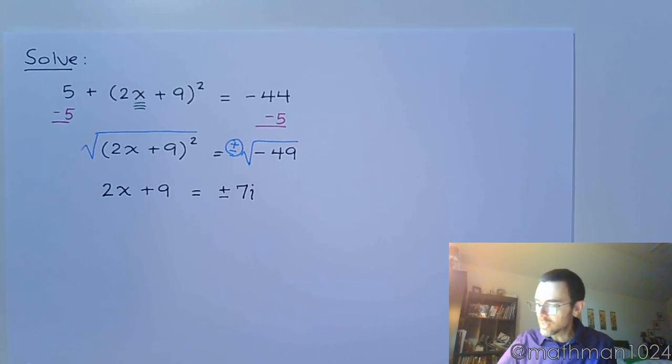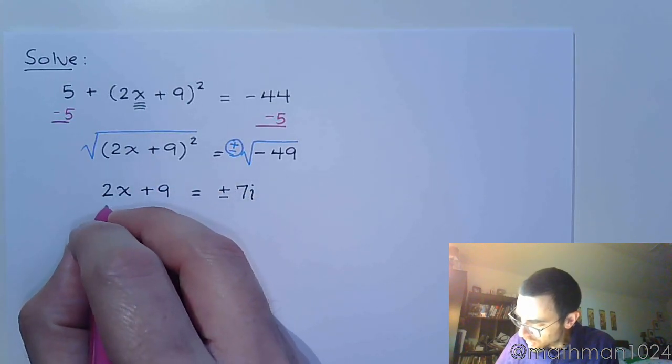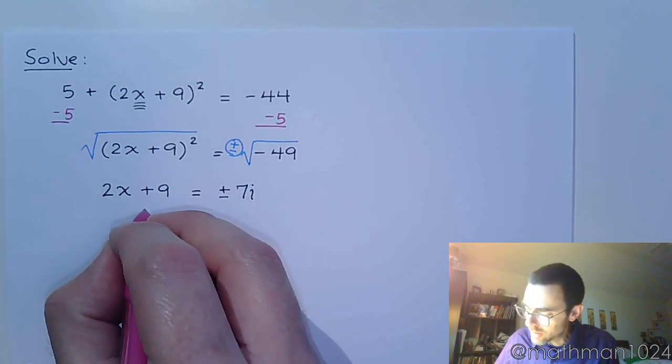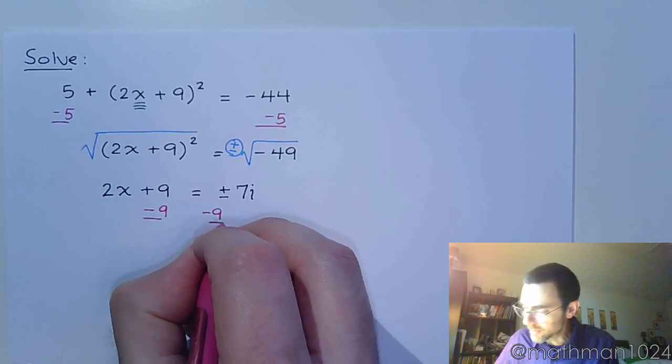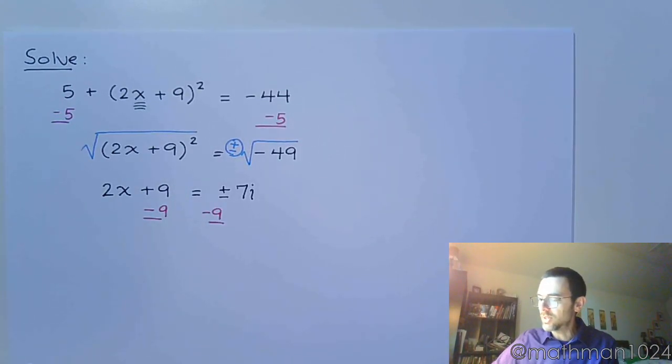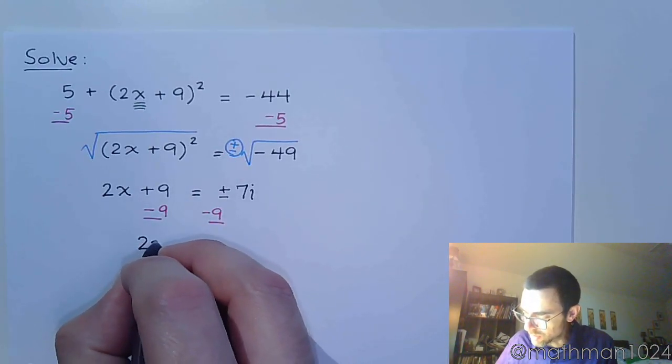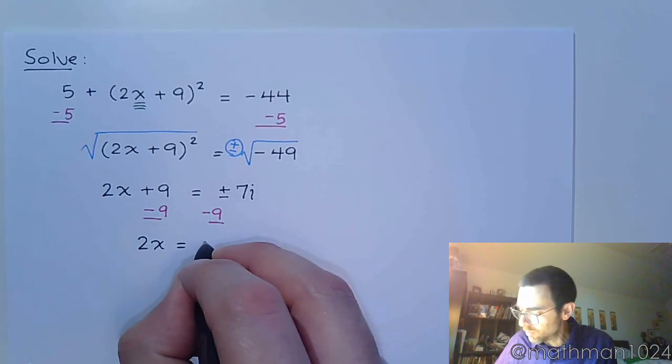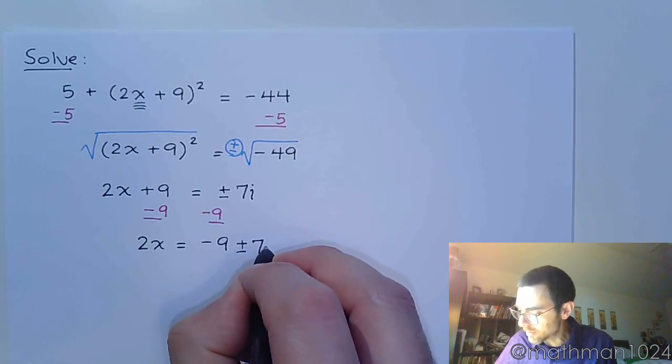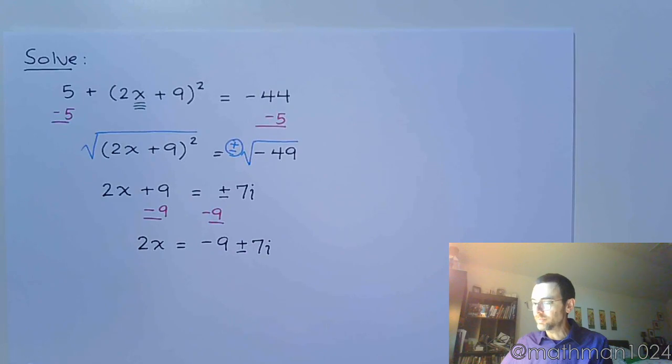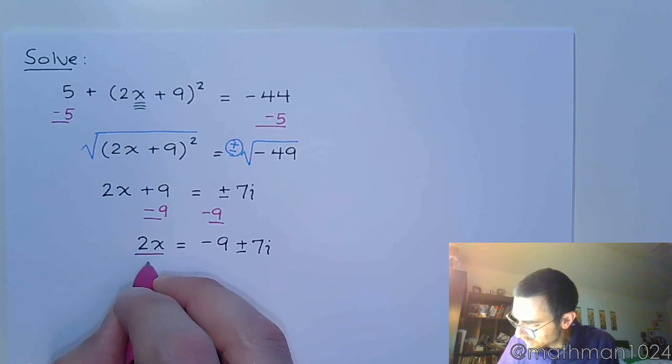All right, now we just have to get x by itself. So the first thing here is to - don't divide by 2 - but subtract 9 on both sides, just like this. Now you'll notice that the 9 and the 7i are not like terms and they do not combine, so we leave this as -9 ± 7i.